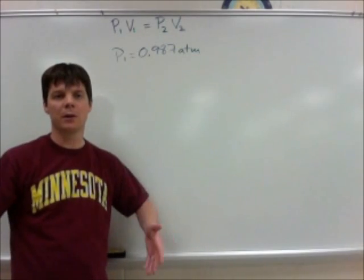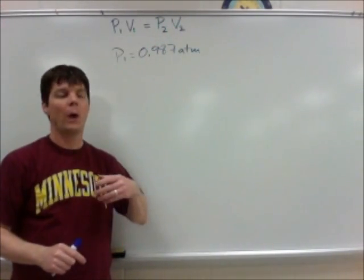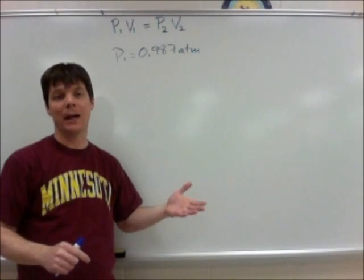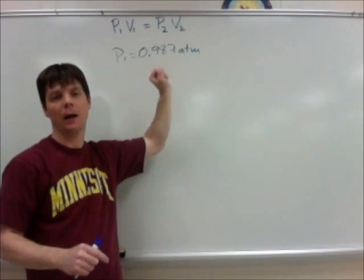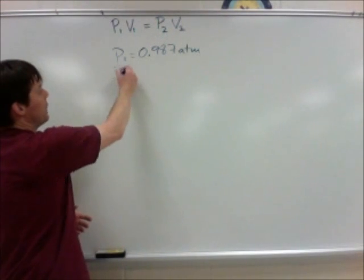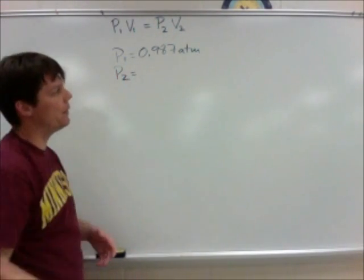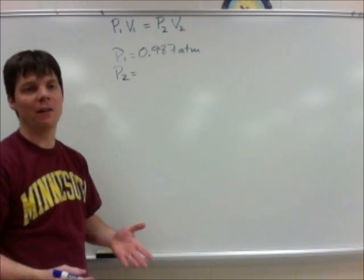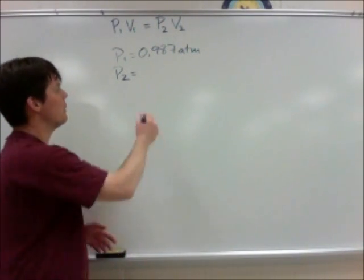We know that this weather balloon is going to rise to a high altitude where the pressure is going to be a lot lower than what it would be at sea level. So that pressure at a higher altitude will be our P2, and this is 2.7 times 10 to the minus 3 atmospheres.